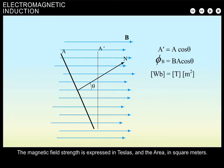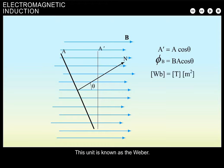The magnetic field strength is expressed in Teslas and the area in square meters. Therefore, the units of the magnetic flux are Teslas square meters. This unit is known as the Weber.